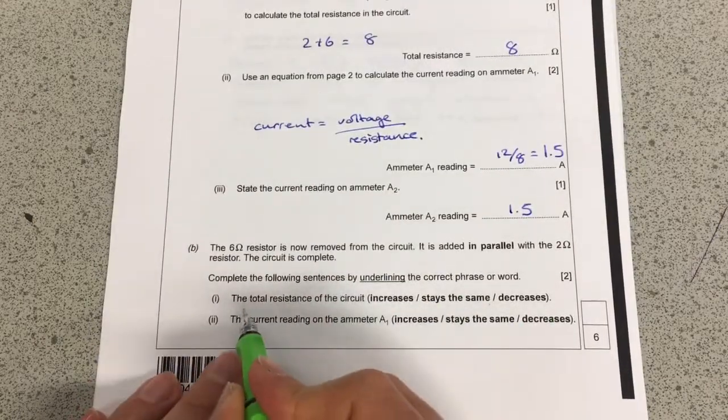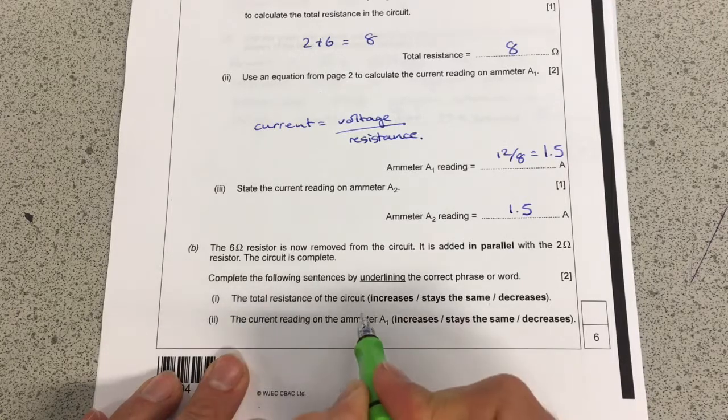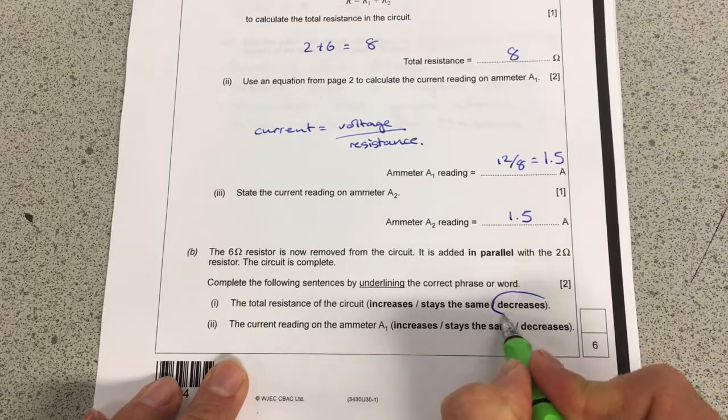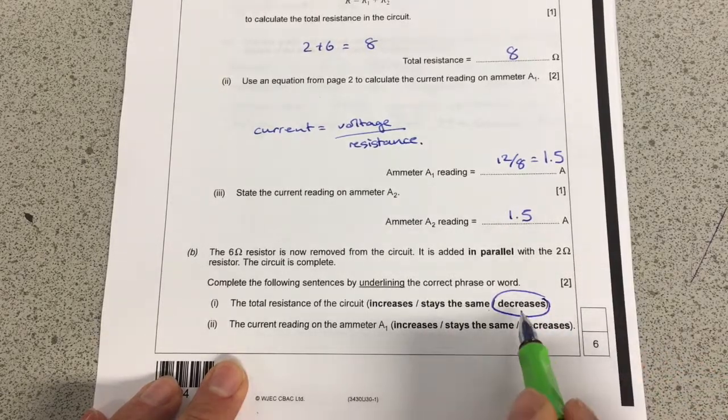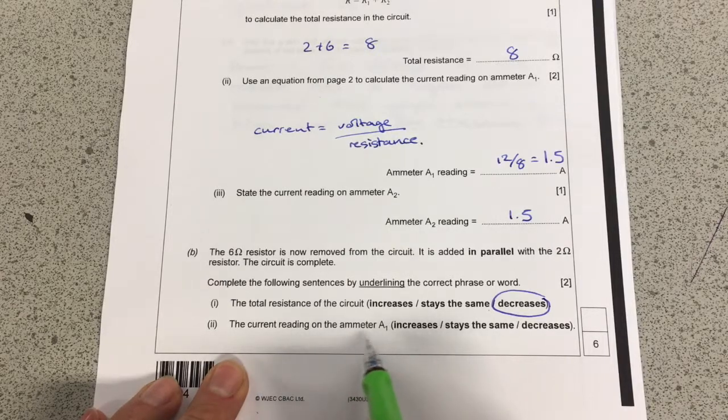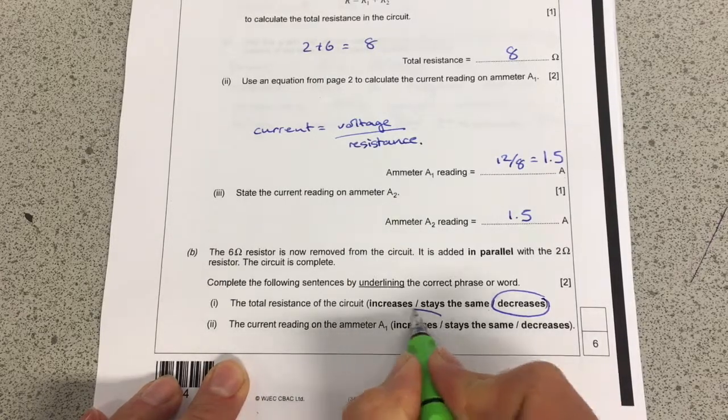And they want us to remember that the total resistance of a circuit with two parallel resistors will decrease. And if the resistance decreases, then the current reading on both ammeters, ammeter 1 in this case, will increase.